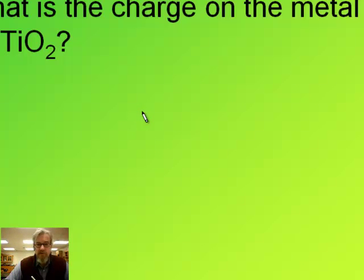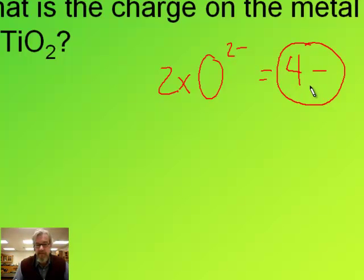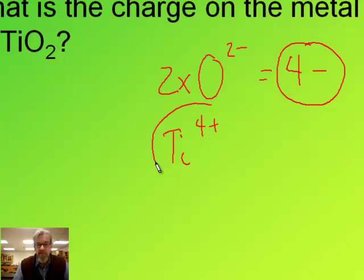This one's a little bit trickier. Find the charge on the metal in titanium with oxygen — TiO2. Oxygen is two minus and we have two of them because of the subscript two, so our total negative charge is four minus. That single titanium atom must have a four plus charge to balance.